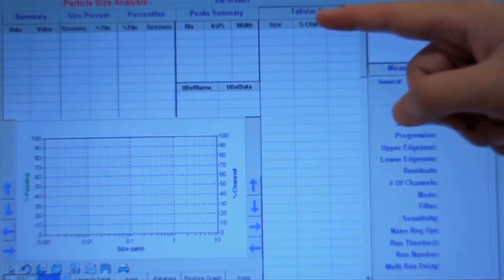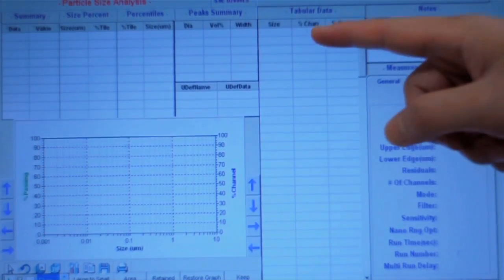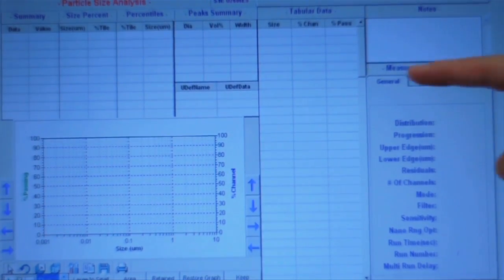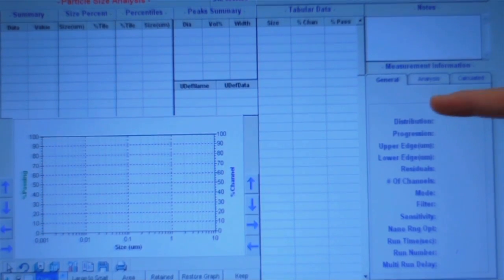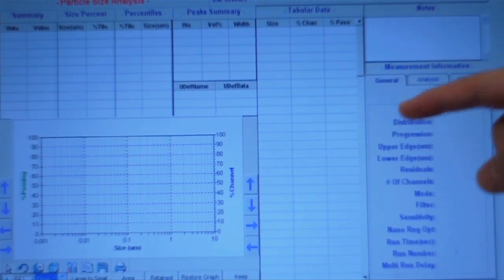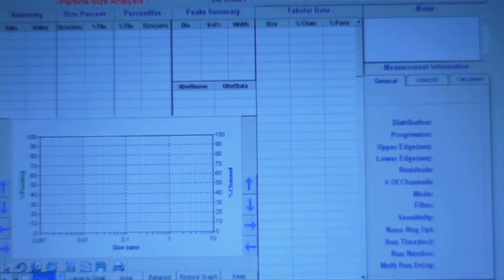If you are interested, the tabulated data column lists the raw data detected. You can enter some notes about the samples. It also displays some information on the analyzer such as size range available and serial numbers.